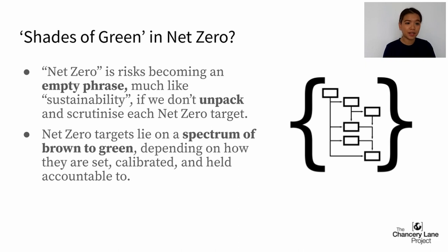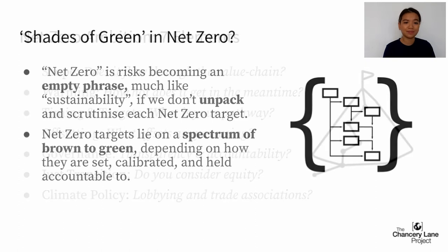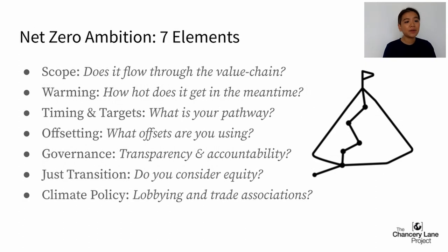There are shades of green for net zero targets, and as lawyers we need to be live to these nuances when we draft. There are seven key elements of a net zero target, and I'll be taking you through these in turn. Within each element is a spectrum of ambition. Different organisations and countries are on different stages of their net zero journey. At TCLP, regardless of where you start, the expectation is that you climb up the ladder of ambition.